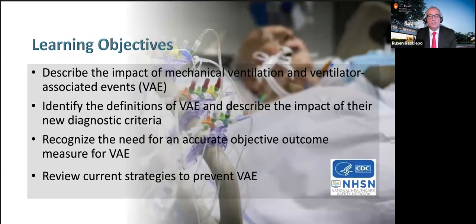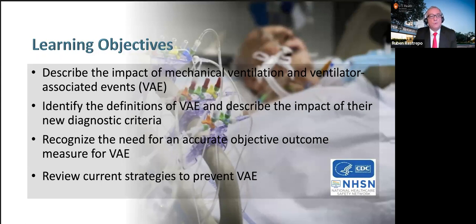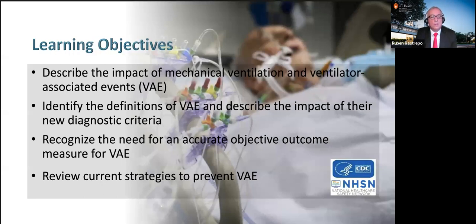The objectives and outline are based on material from the CDC and the National Healthcare Safety Network. I'm going to describe the impact of mechanical ventilation, because that's the source of all the VAEs, IVACs, and VAPs. I'll place emphasis on the new definitions and describe how much these new definitions have impacted the risk and diagnosis of VAEs and VACs. We need accurate objective measurements for VAE, and I'll briefly review current strategies to prevent VAE.